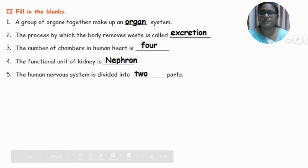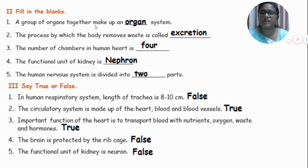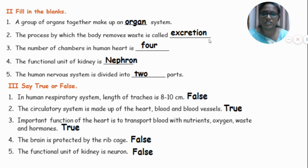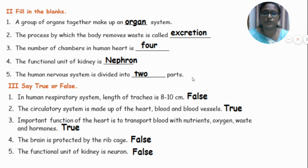Now fill in the blanks. A group of organs together make up an organ system. The process by which the body removes waste is called excretion. The number of chambers in the human heart is four. The functional unit of the kidney is nephron. The human nervous system is divided into two parts.